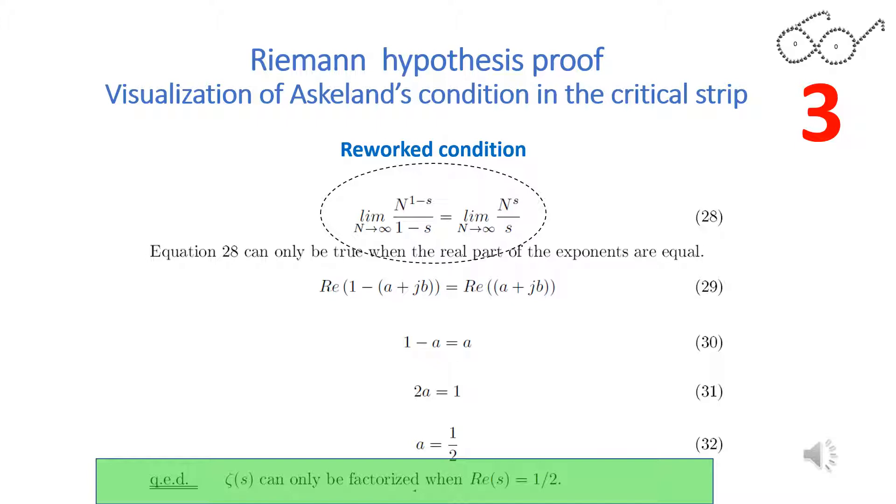This is a slide from my Riemann hypothesis proof, where I show that Askeland's condition can be reworked with Fourier transform to equation 28. N is the number of vectors of the zeta function. As you see, equation 28 can only be solved when the exponents are equal. That happens for s equals 1 half.